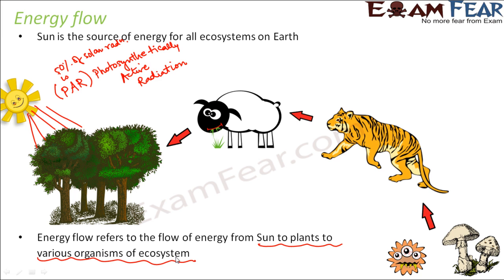From this we understand what is meant by energy flow. Now here everything is dependent on the sun, but it is not always the case — there are certain exceptions in the ecosystem where the sun is not the ultimate source of energy. For example, in a deep sea ecosystem, solar energy is not available, so the sun is not the ultimate source of energy there.